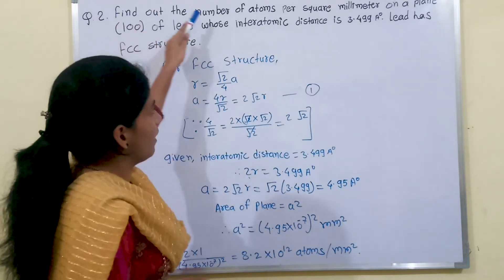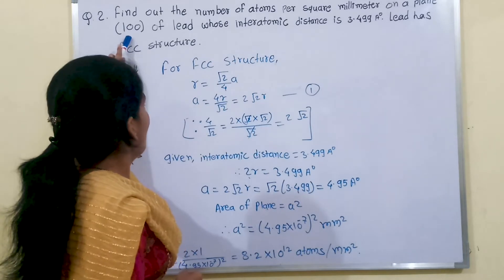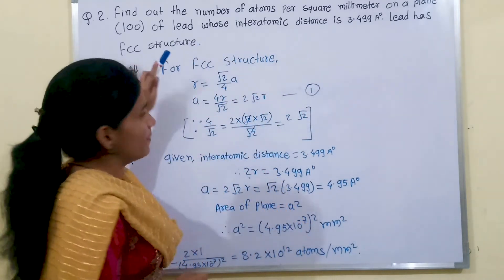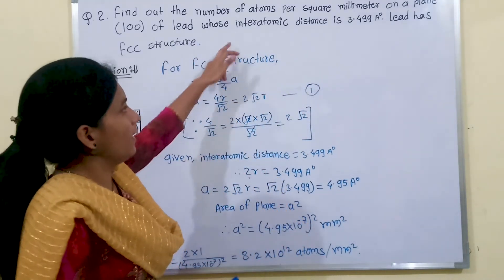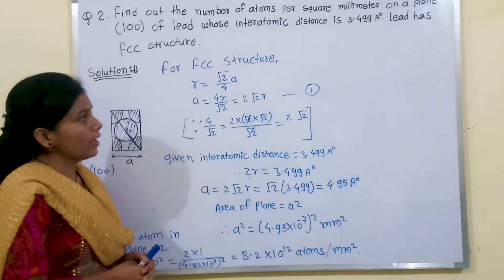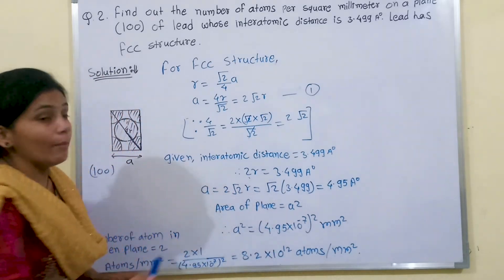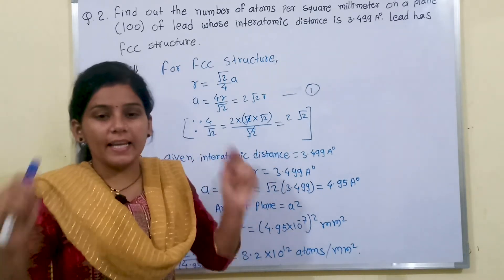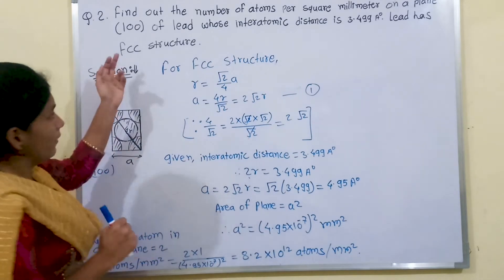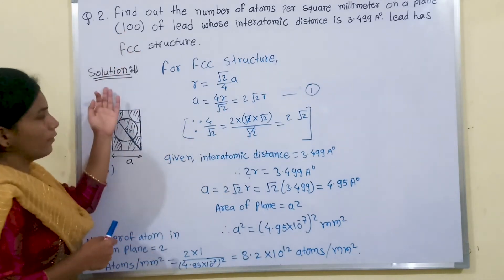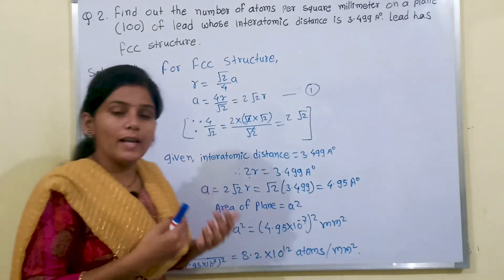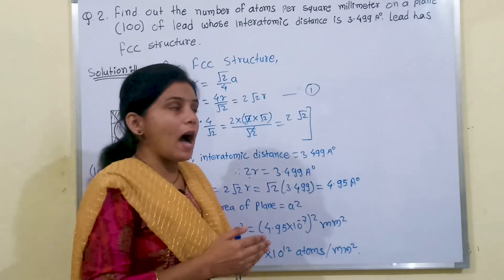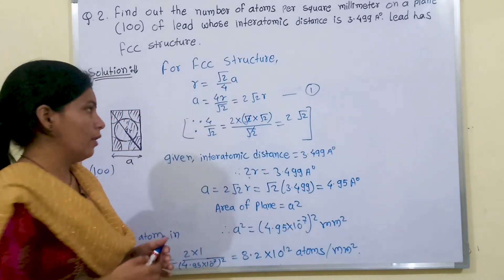We have a second question: find the number of atoms per square millimeter on the (1,0,0) plane of lead, whose interatomic distance is 3.499 Å. Lead has an FCC structure. We know the formula for atomic radius in FCC is R = A√2 / 4, from which A = 4R / √2 = √2 × 2r. This is equation number 1.